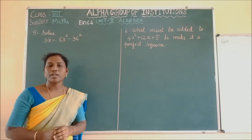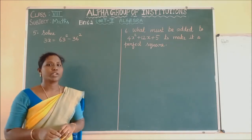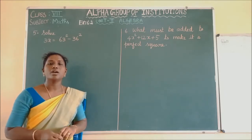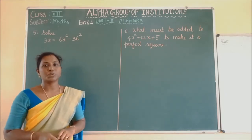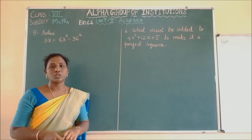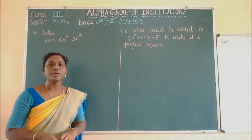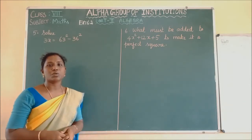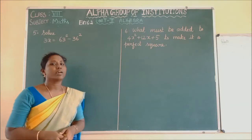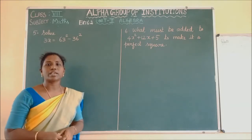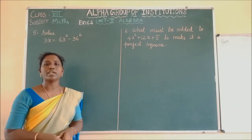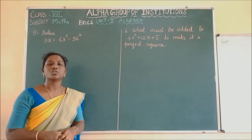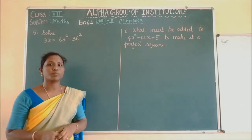What are the 4 main algebraic identities we are using here? A plus B whole square is equal to A square plus 2AB plus B square. A minus B whole square is equal to A square minus 2AB plus B square. A plus B into A minus B is equal to A square minus B square. X plus A into X plus B is equal to X square plus A plus B into X plus AB. These are the 4 main identities we are using in exercise 6.2.